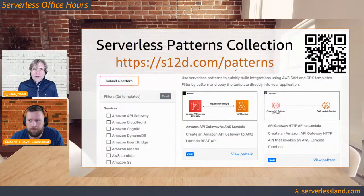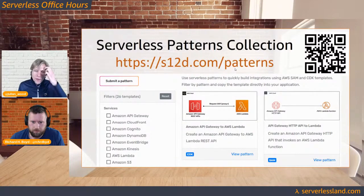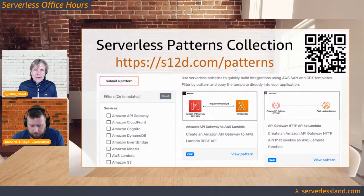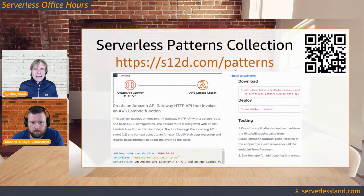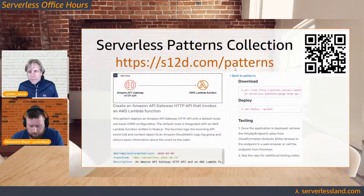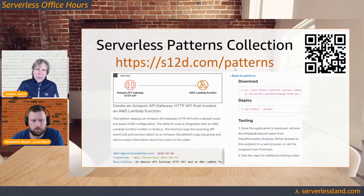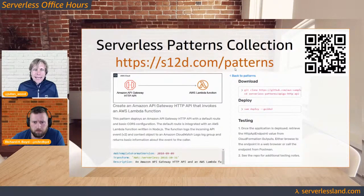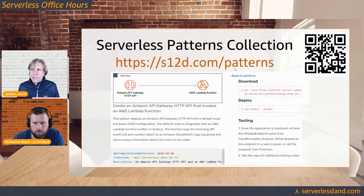Our team has released the Serverless Patterns Collection. If you are writing serverless applications using AWS SAM or the CDK, these are little snippets of code you can grab off GitHub that allow you to connect two services together — API Gateway and Lambda, EventBridge to SNS, Lambda to SQS, and all these kinds of things. Those little nuggets of SAM and CDK code that you'd otherwise be hunting around the internet for — this is a great resource.